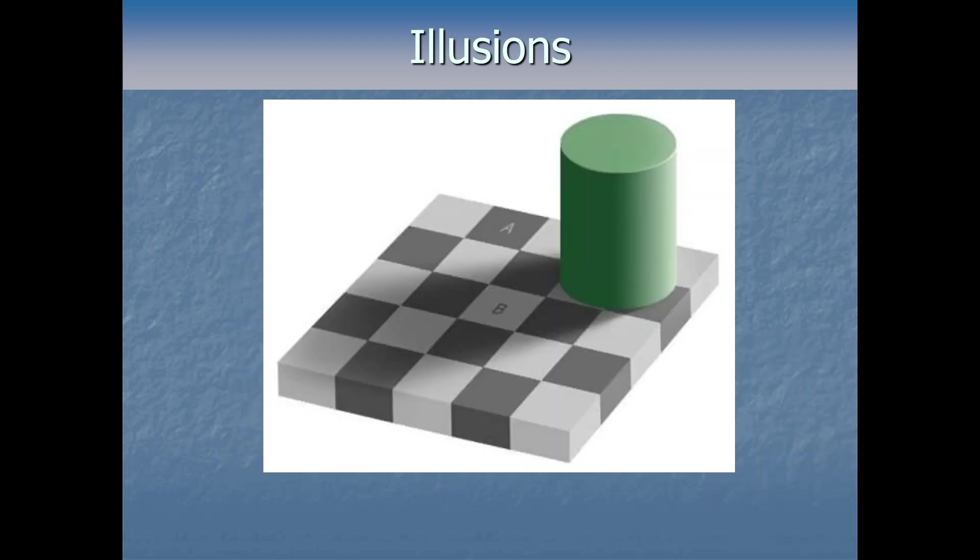This one's always intriguing if you haven't seen it before. Let's start with an easy question. Between A and B, which square would you say is the darker square? Most people answer A, right? It's clearly a dark gray square, but they're actually the same freaking color. Same color, same brightness, exact same.